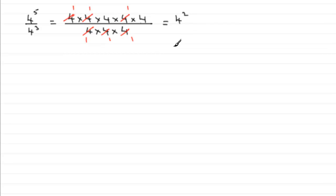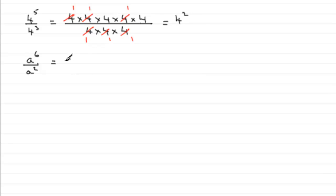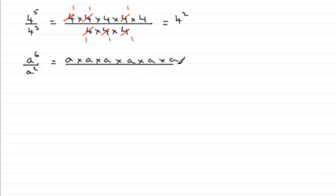Let's try an algebraic one now. Let's say a to the power 6 divided by a squared. What would this simplify to? Well, it is in fact a to the power 4. Because a to the power 6 is a repeatedly multiplied by itself 6 times over, and it's divided by a squared — in other words a times a.